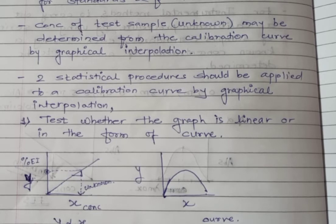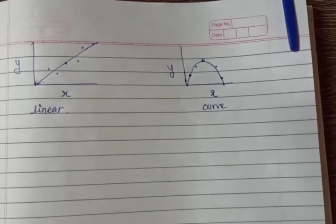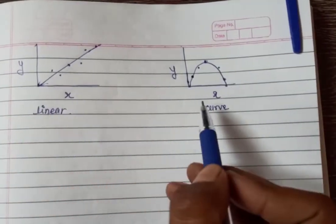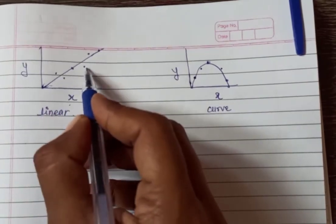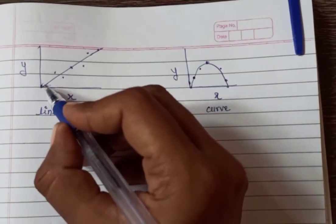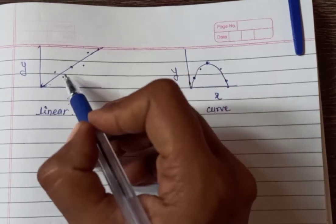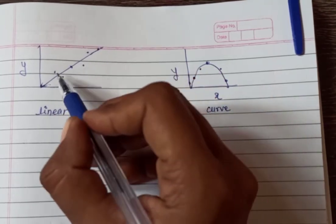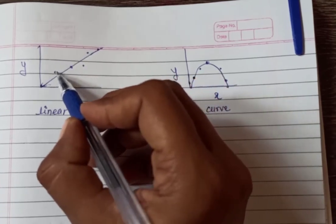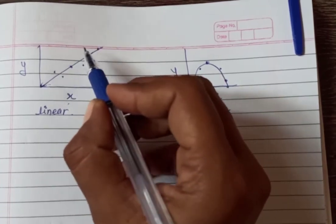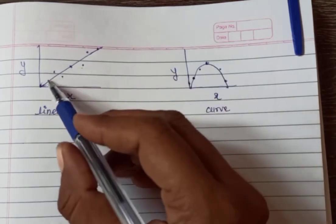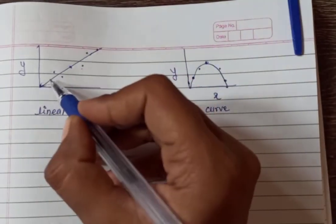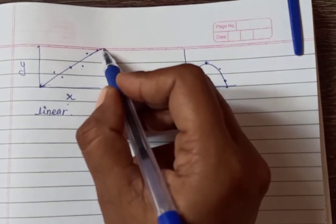We try to draw the best straight line through the scattered points. For example, in the linear graph where all points are scattered, the line does not pass through every point. Some points remain off the line, so we balance the line so that the same number of data points are on the upper side and the same number on the lower side, with the line passing in between all the scattered points.